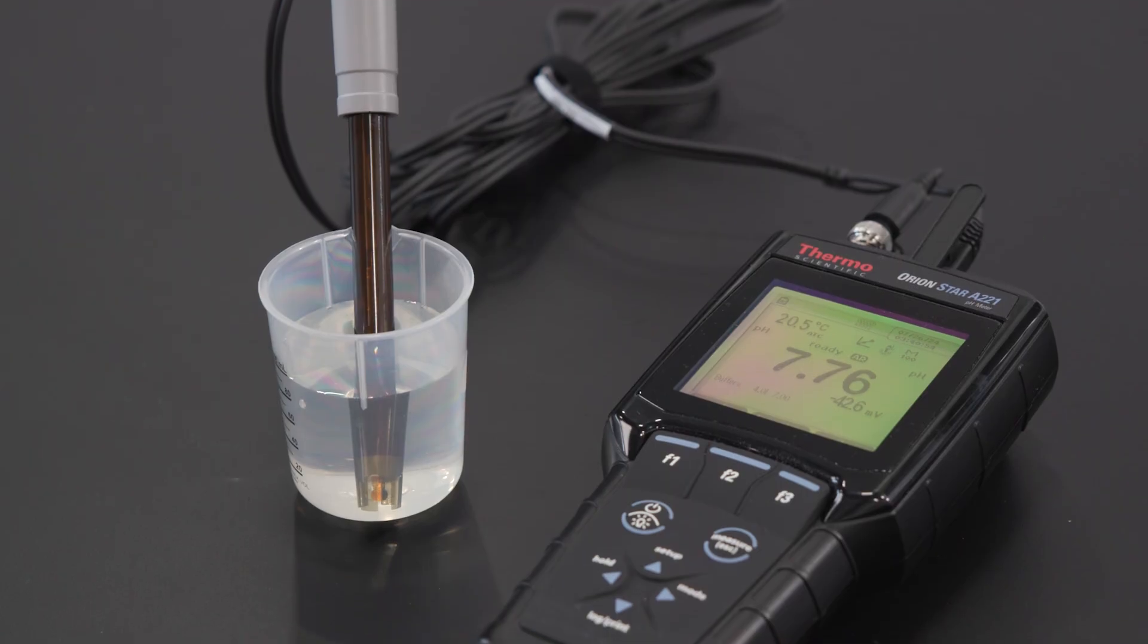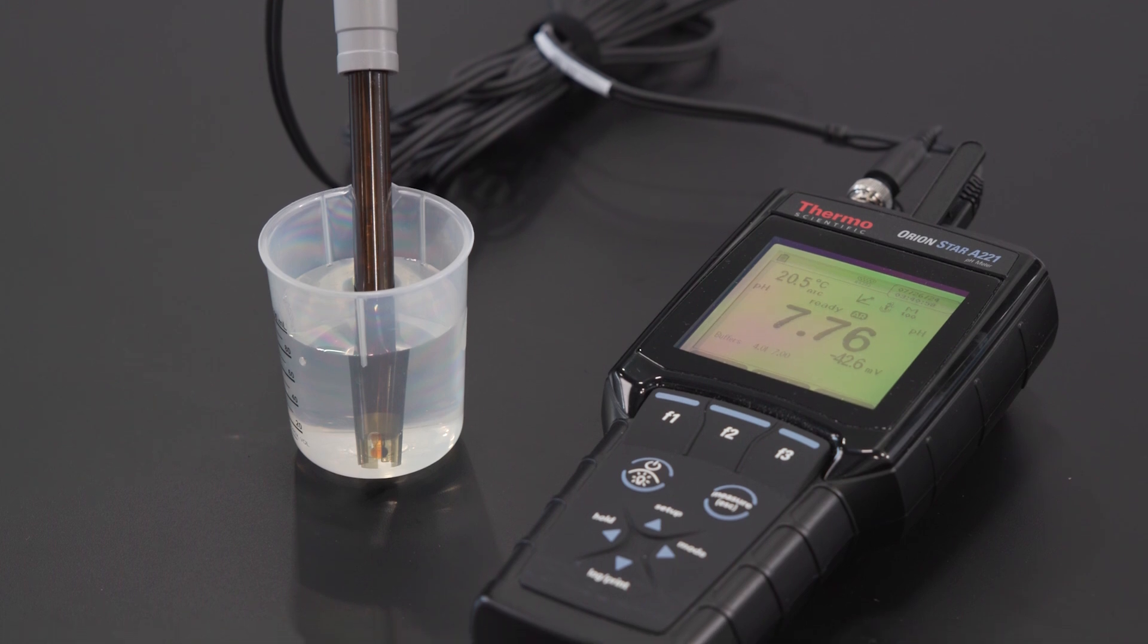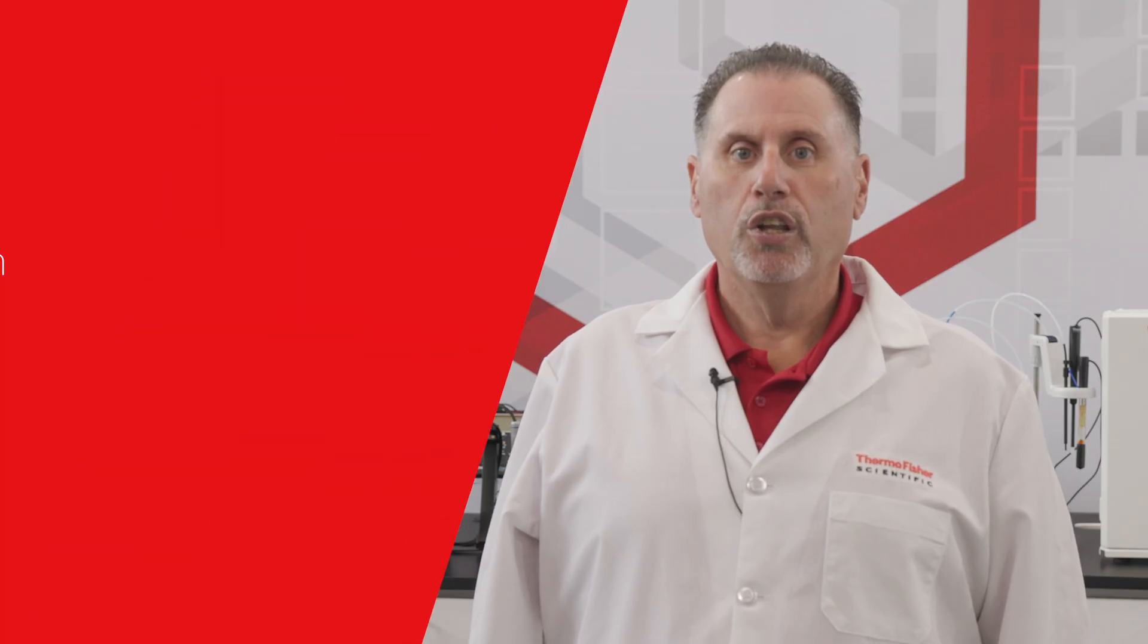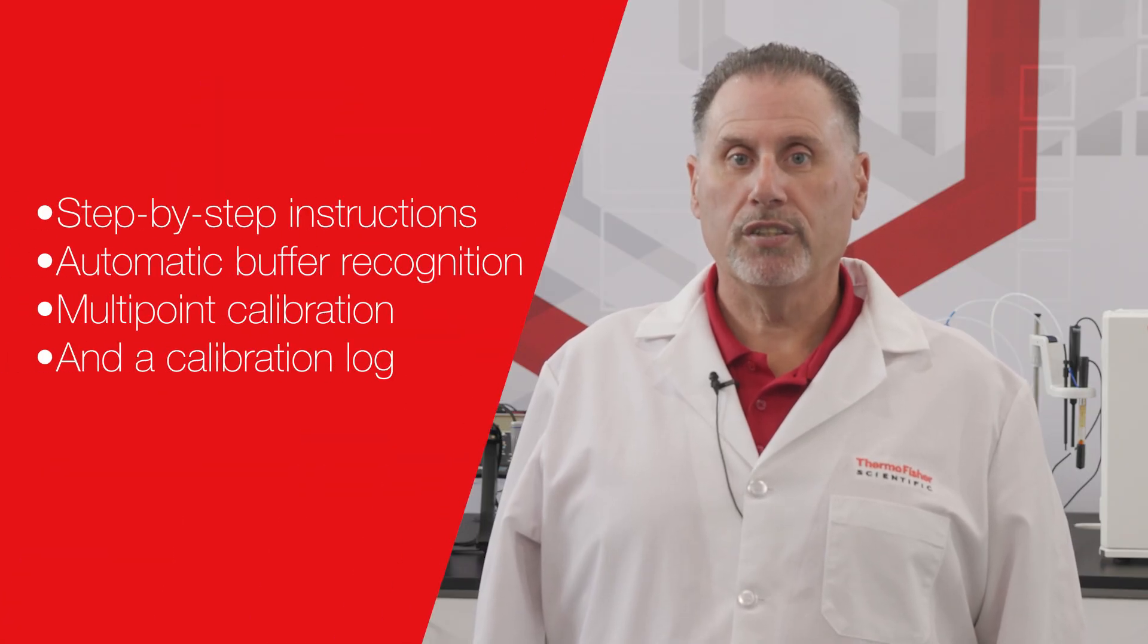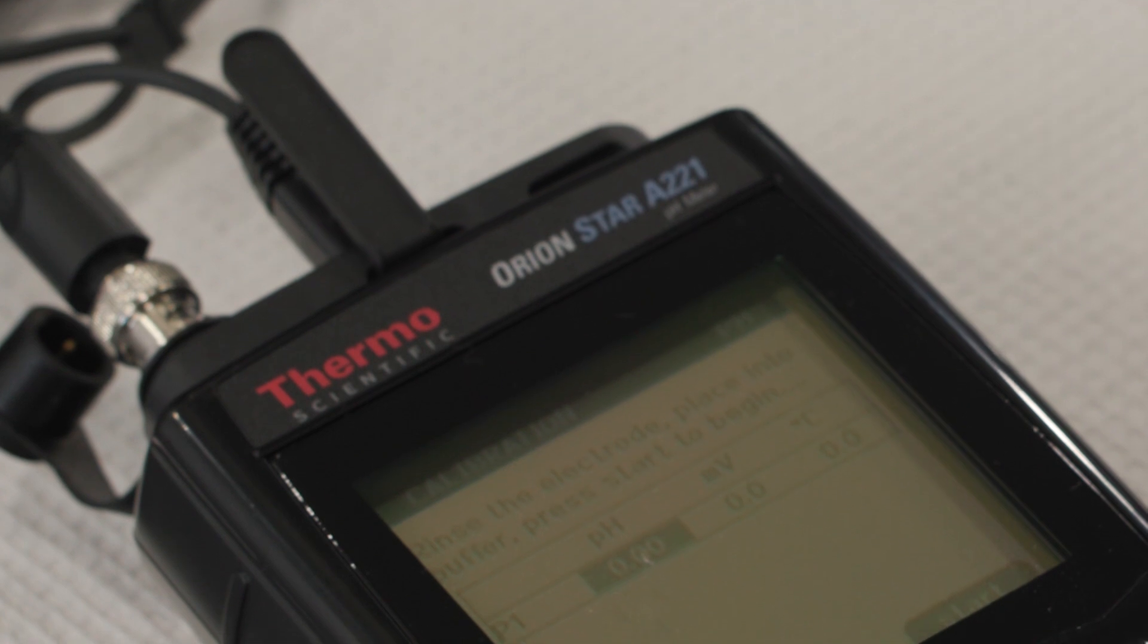Now let's talk about calibration. Every pH meter needs to be calibrated regularly. Choose a meter that is fast, easy to calibrate, and provides accurate results. Look for features like step-by-step instructions, automatic buffer recognition, multipoint calibration, and a calibration log. Let's discuss each of these features further.